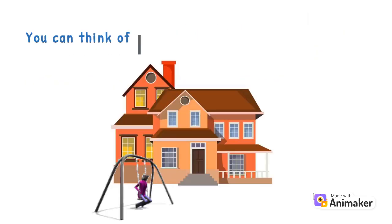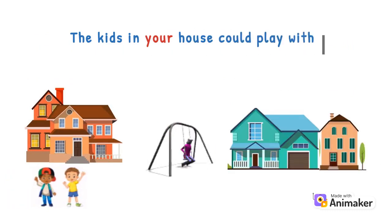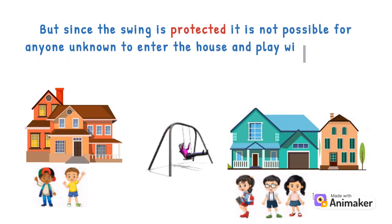You can think of a swing in the lawn of your house. The kids in your house could play with it, as well as the kids in the neighbor. But since the swing is protected, it is not possible for anyone unknown to enter the house and play with the swing.